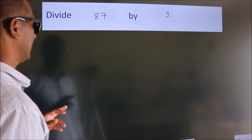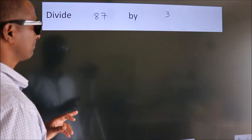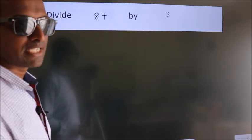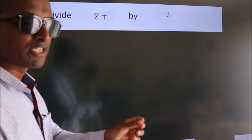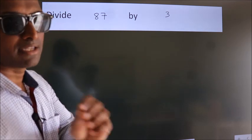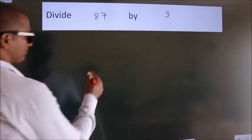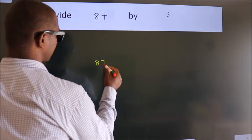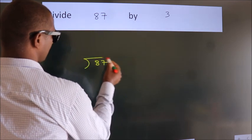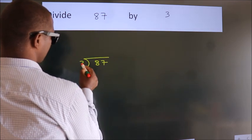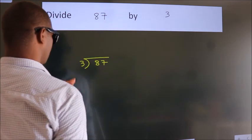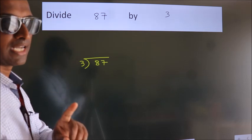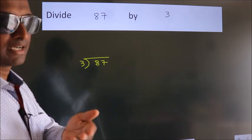Divide 87 by 3. To do this division, we should frame it in this way: 87 here, 3 here. This is your step 1.